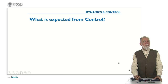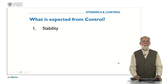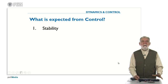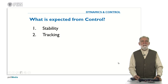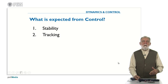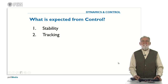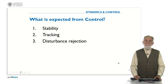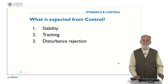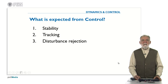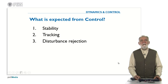First of all, what is expected from control? Control is able to modify the dynamics of the process, and in particular we want to achieve stability. But not only stability — we want our system to be able to follow some references, some set points, and we would like to have this property of tracking. Also, in the system there are other inputs which are disturbances, and we want to achieve disturbance rejection or at least reduce the effect of disturbances.